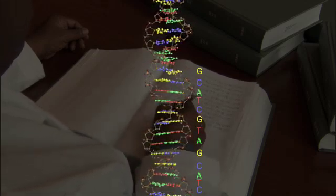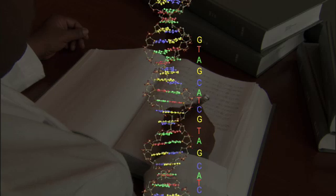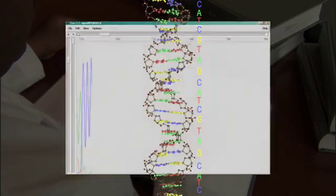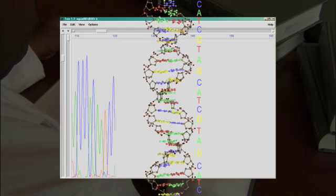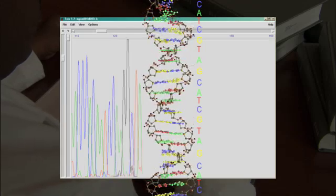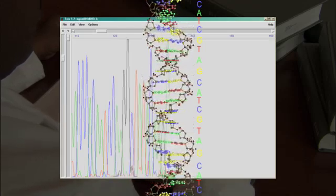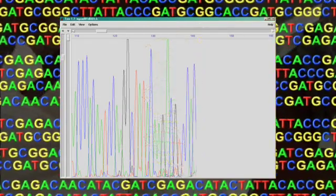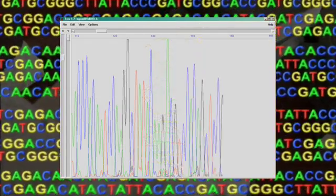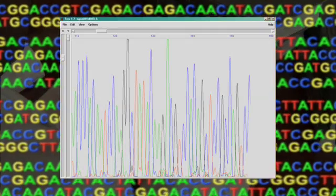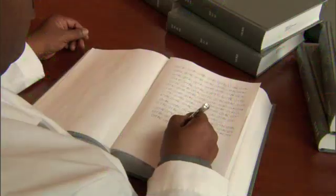Step by step and three billion letters long, this is the formula for a human being. The existence of this tiny code, written molecule by molecule inside each of our cells, is a remarkable discovery all by itself. But scientists have now read that code, examined it letter by letter, and written it down.